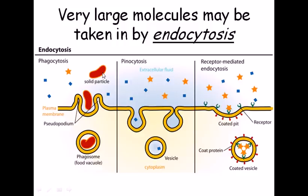Pinocytosis is a type of endocytosis involving the engulfment of liquid particles rather than solid ones. In phagocytosis the membrane invaginates and covers the solid particle, whereas in pinocytosis the cell membrane pinches inward into the cytoplasm to form a sac-like structure. Liquid molecules enter this sac, producing a vesicle. In phagocytosis a larger engulfment structure is formed, while in pinocytosis it is a smaller pinch inward to produce a vesicle carrying excess cellular fluid.